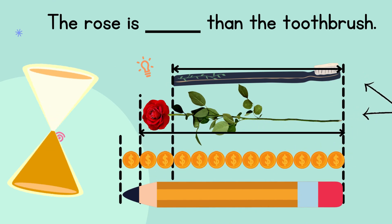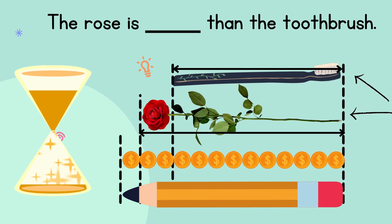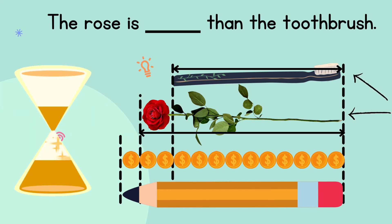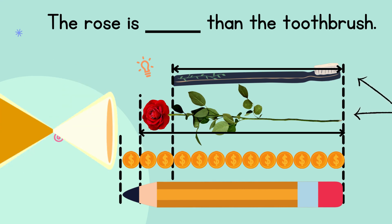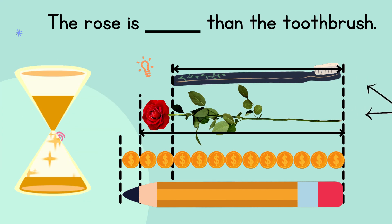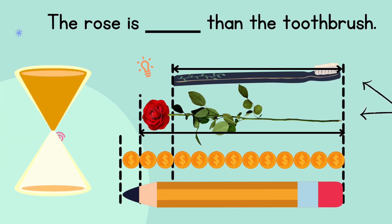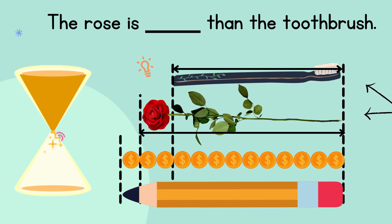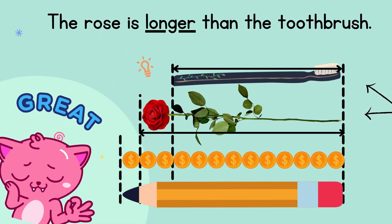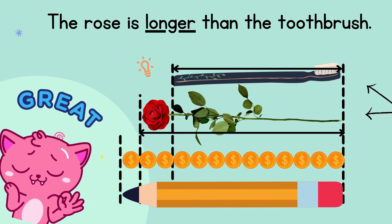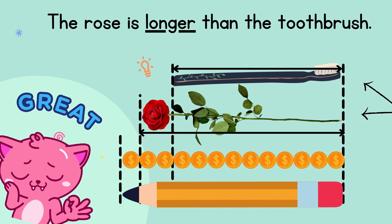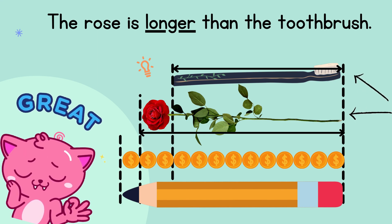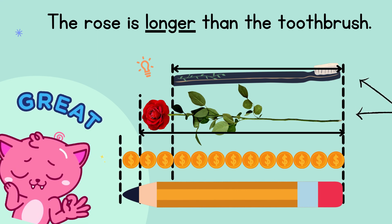Now, look at these objects carefully. Can you tell — is the rose longer or shorter than the toothbrush? The answer is longer. The rose is longer than the toothbrush.